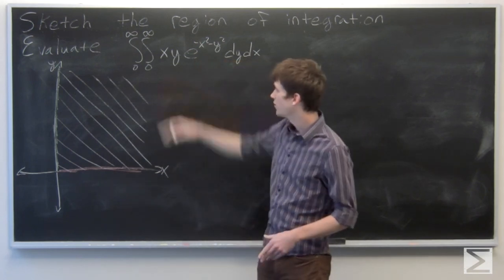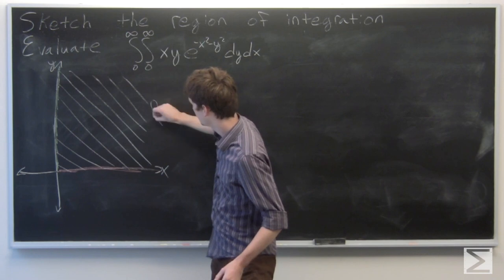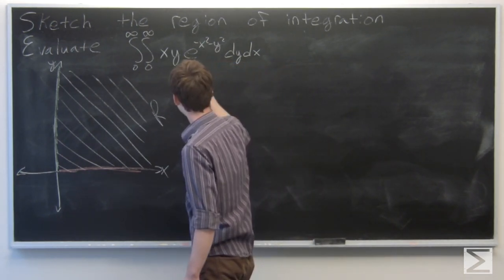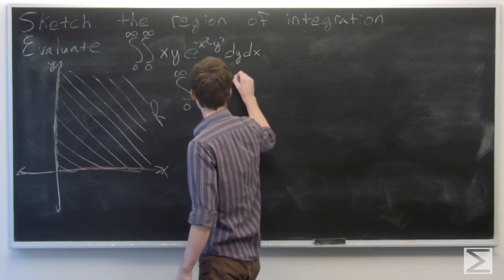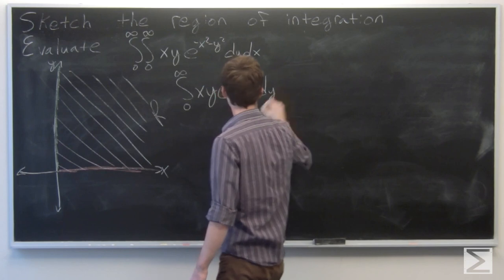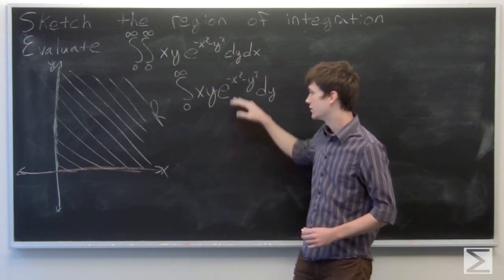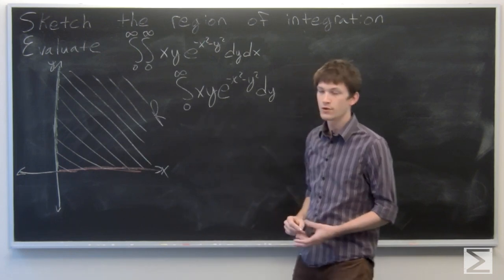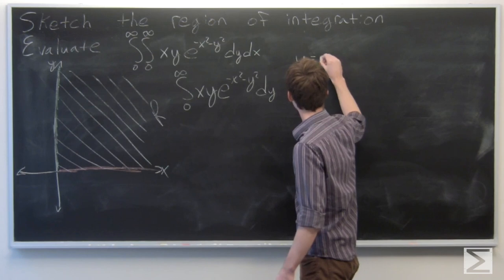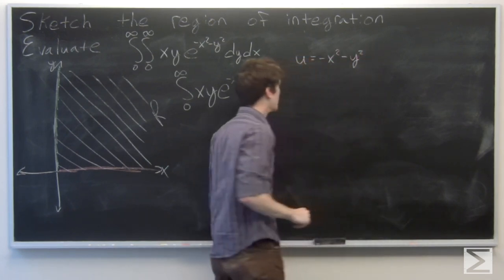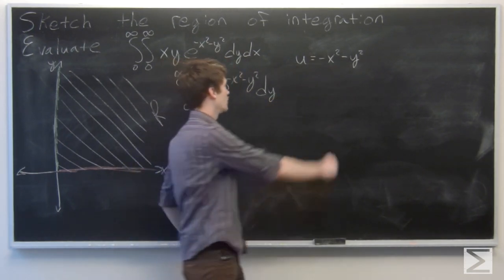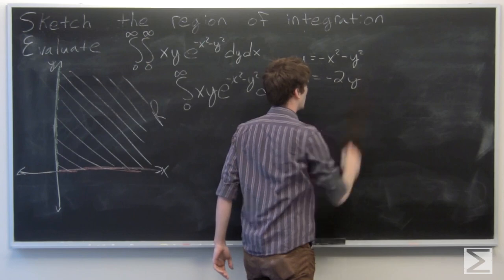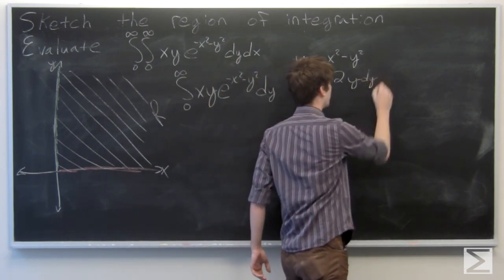Now we want to evaluate our iterated integral. First we'll calculate the integral from 0 to infinity of x·y·e to the power of (negative x squared minus y squared) dy. This looks like a good problem for u-substitution. We'll let u equal negative x squared minus y squared, and then du, differentiating with respect to y, is negative 2y dy.